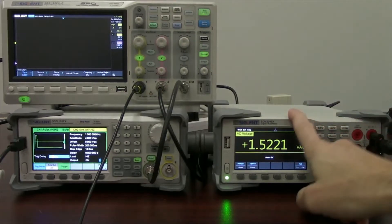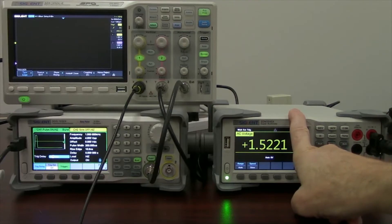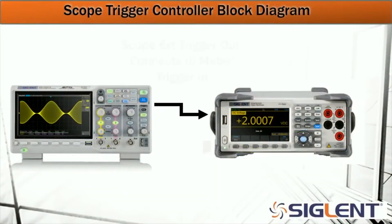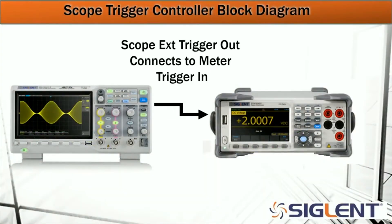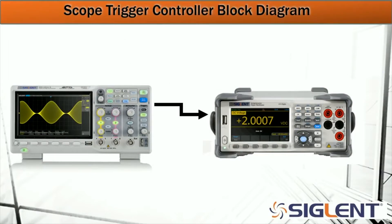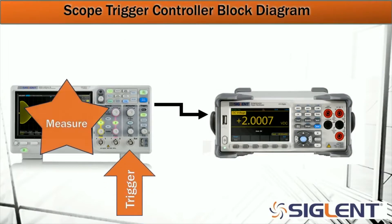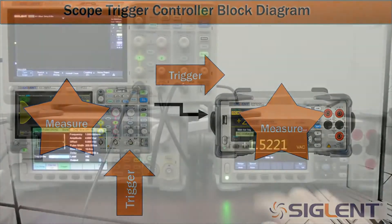This is the SDM3045X. So the oscilloscope is going to trigger, measure on channel 1 and channel 2, and simultaneously send a trigger output to the multimeter so that it can make an AC voltage measurement.